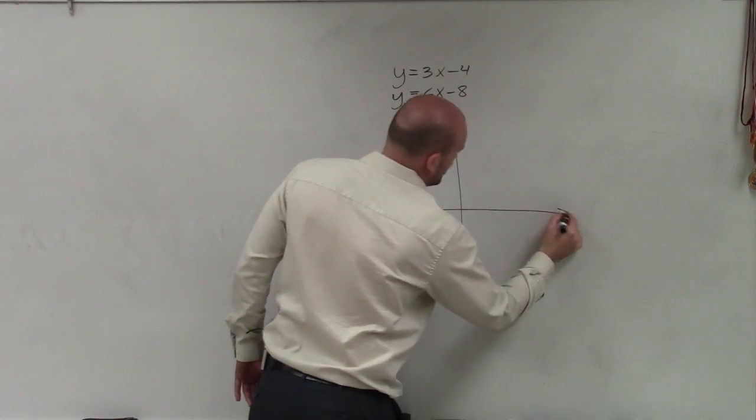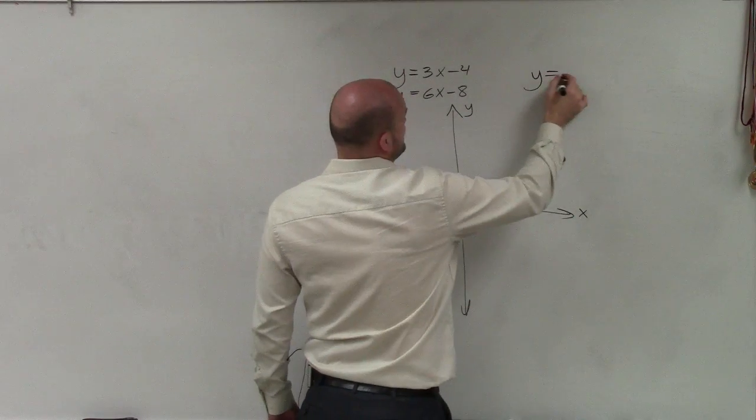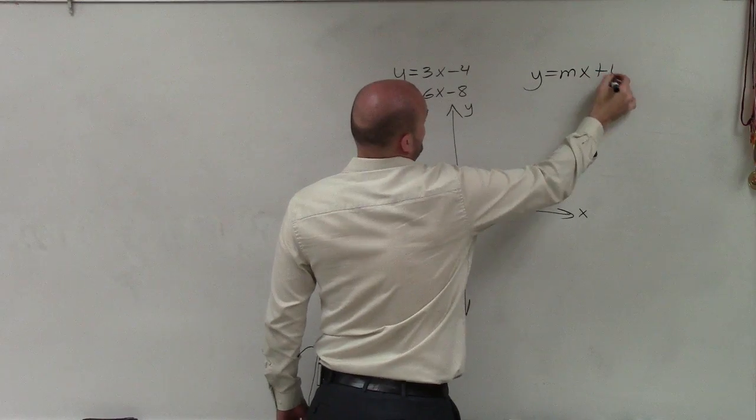To do slope-intercept form, we first need our Cartesian coordinate, which is going to have the y-axis and the x-axis. And we're going to use the slope-intercept form, y equals mx plus b.